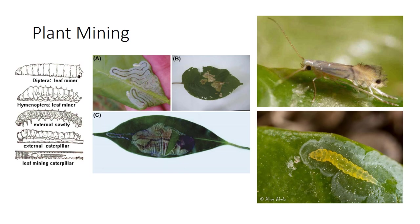Leaf miners lie between two epidermal layers of a leaf, and their presence can be detected externally after the area they have fed upon dies. The damage may appear as tunnels, blotches, or blisters. Tunnels may be linear or serpentine, and often widen as they get bigger. These flattened larvae can belong to Diptera, Lepidoptera, Coleoptera, or Hymenoptera. The most common are larval flies and moths. You can often see their excretory material — frass — left in the mine as black or brown pellets.